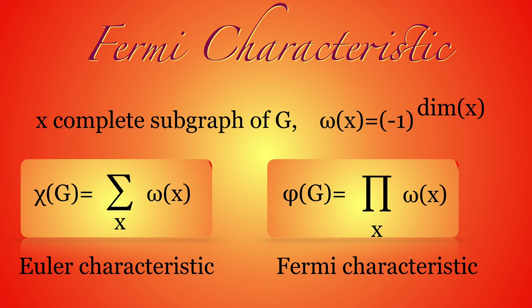The Fermi characteristic is a cousin of the Euler characteristic. While the Euler characteristic adds up the signatures of the complete subgraphs, the Fermi characteristic is the product of the signatures. It is one if there is an even number of odd-dimensional simplicies, and minus one if there is an odd number.